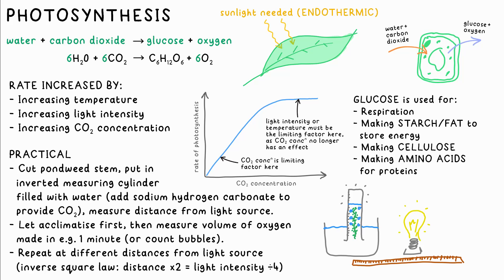However, light intensity follows an inverse-square relationship. In other words, if you double the distance, the light intensity quarters. Three times further gives one-ninth of the intensity. So therefore, the rate of photosynthesis should also follow suit.